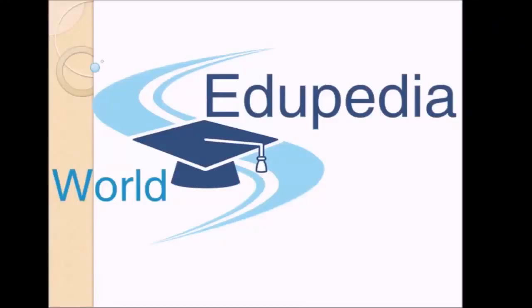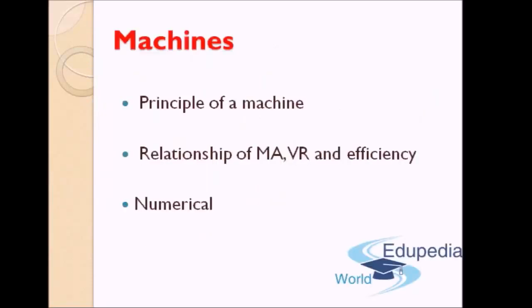Hi friends. Welcome back to Edipedia World. Last lecture was an introductory lecture on machines where we saw the definition of machine and were introduced to certain terminologies. This chapter we will focus on the principles of a machine. We will find the relationship between mechanical advantage, velocity ratio, and efficiency, and then we will see some numericals.